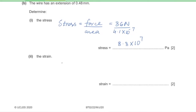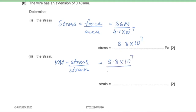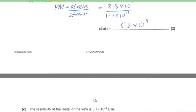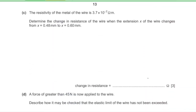Part 2: calculate the strain. Since the original length is not given, use Young modulus = stress / strain, so strain = stress / Young modulus = 8.8 × 10⁷ / 1.7 × 10¹¹ = 5.2 × 10⁻⁴ (dimensionless).